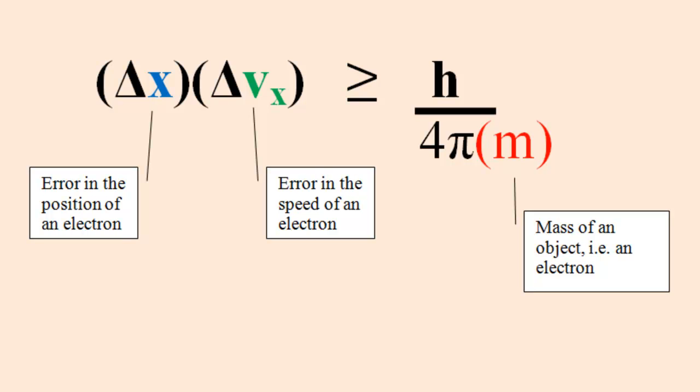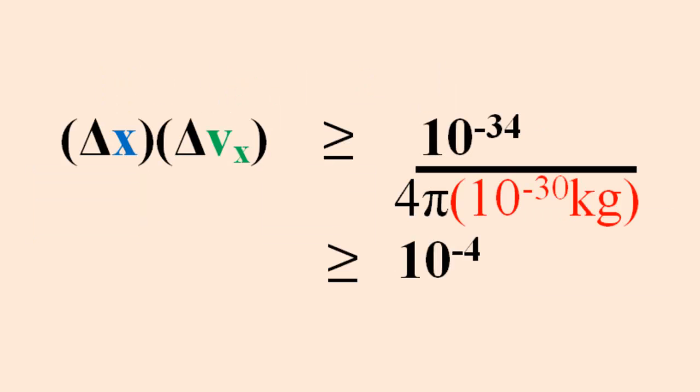I like to explain the inequality by looking at the fraction on the right side of the inequality. Substituting an estimate for Planck's constant, 10 to the minus 34, and an estimate for the mass of an electron, 10 to the minus 30 kilograms, we find that the fraction on the right is equal to roughly 10 to the minus 4.